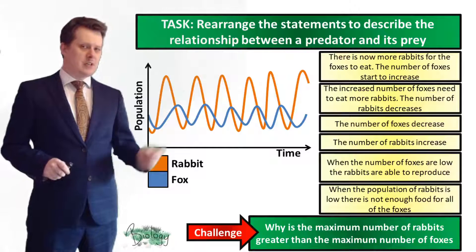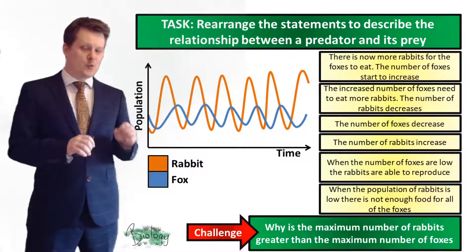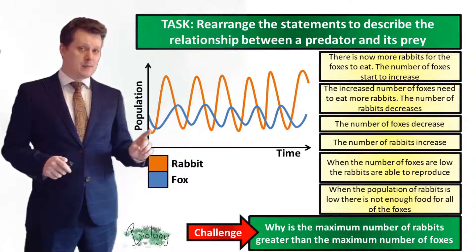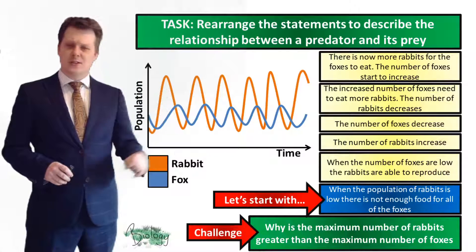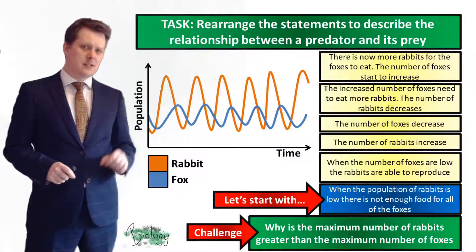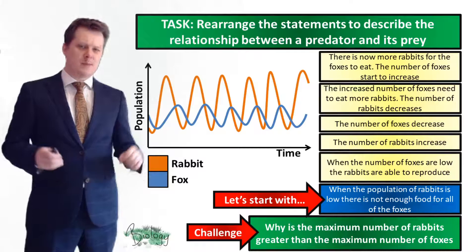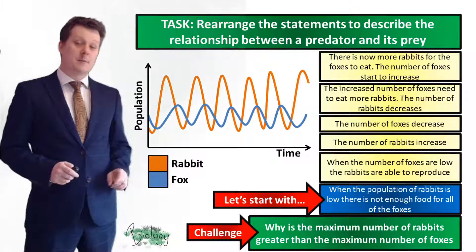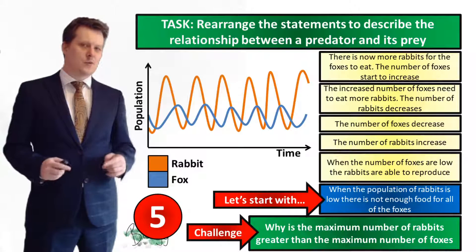What I want you to do is arrange these six statements to describe the relationship between this predator and its prey, with everybody's first statement being the one shown here. If you've downloaded the worksheets, this is available as a cut and stick activity; if not, you can copy out the statements in the order you think they go. And if you really want a challenge, explain why the maximum number of rabbits is greater than the maximum number of foxes. I'm going to put five seconds on the clock, and if you need more time pause the video, and when you've finished we'll go through the answers together.